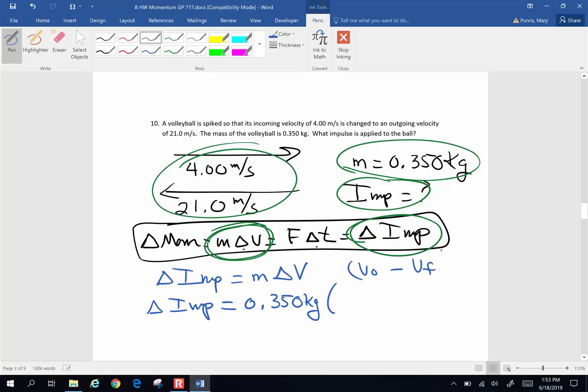So the change in impulse will be the mass of 0.350 kilograms times the change in velocity, which is the original velocity minus the final. So this is going to be my 4 meters per second minus, and because the velocity changed directions, minus 21 meters per second, so 4 minus a minus 21, all of this is going to be 25. So 25 times 0.35, the impulse applied is 8.75, and let's take a look at the units.